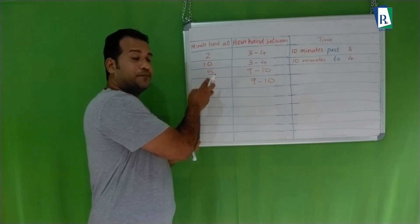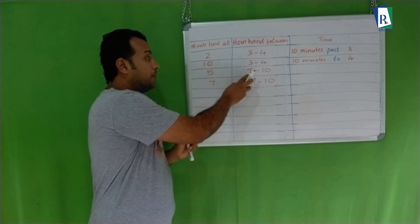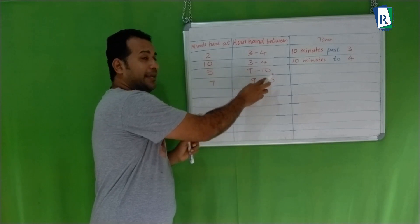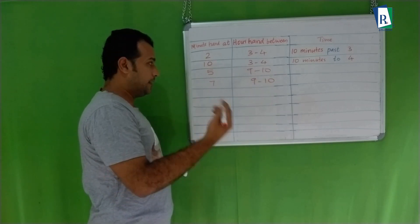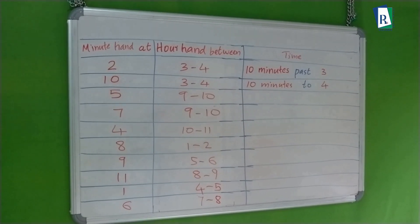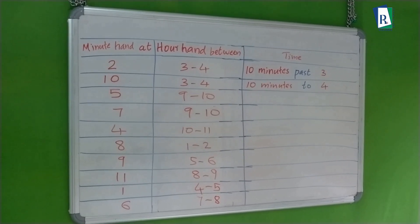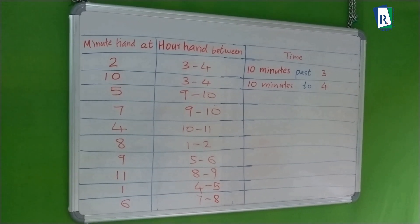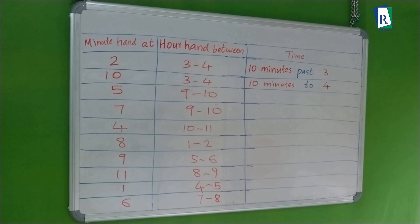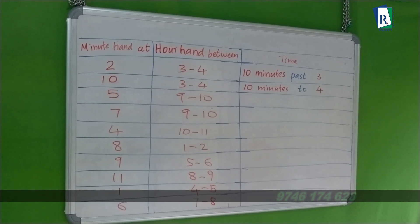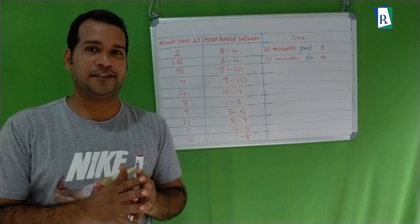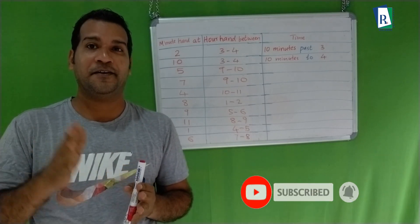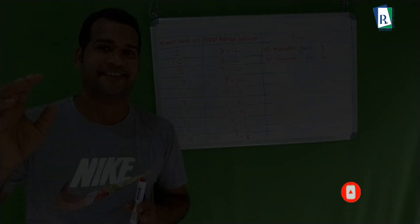Some more questions for you: minute hand at 5, hour hand in between 9 and 10; minute hand at 7, hour hand between 9 and 10 — write the time. These are questions for you, just write them down. I think you understood this and we can meet in the next class. Till then, bye bye!